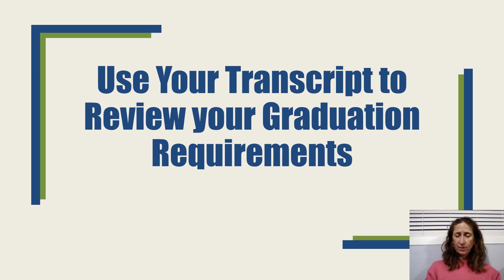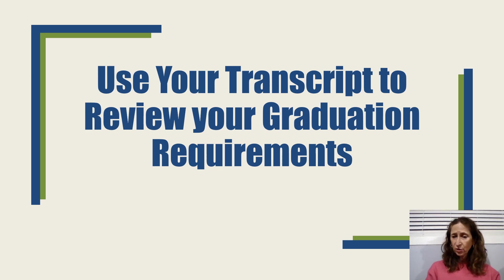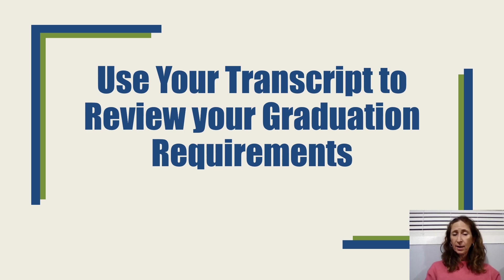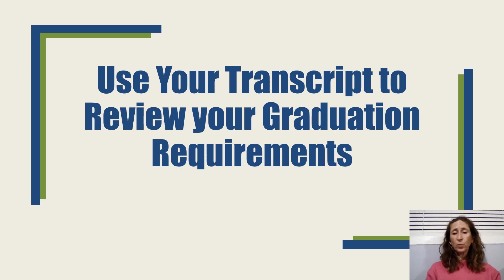Now that you have a better idea of what a transcript is, what goes on it, how to calculate your own GPA, and what you need to graduate, we'd like for you to take a look at your own transcript and do an audit. In student support, when we audit transcripts, we use a highlighter to highlight all math credits, science credits, social studies credits, English credits, and health and PE. That gives us a quick glance at what the student has already accomplished and what they still need to determine if they're on track for graduation.